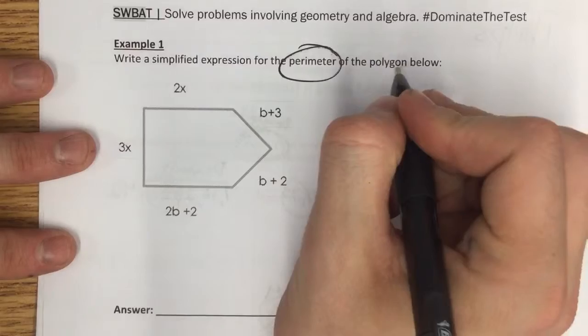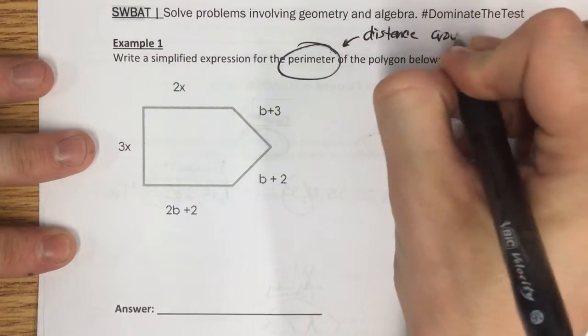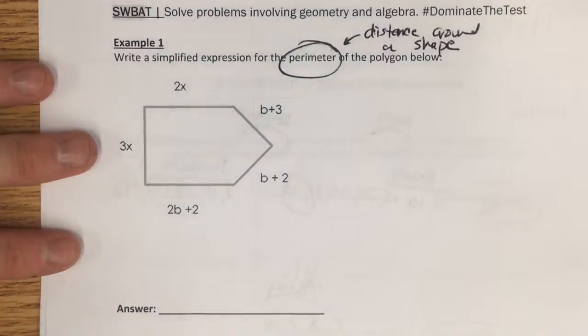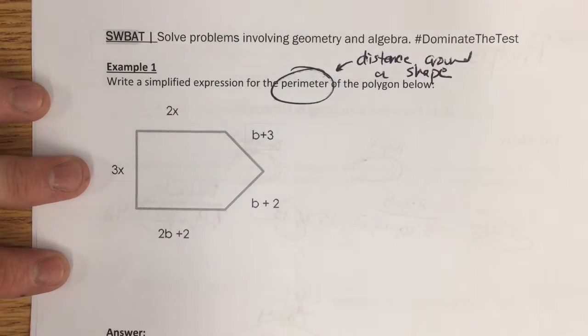we know perimeter, that is the distance around a shape. So if perimeter is distance, I need to add up all of my sides to figure out what the expression will be.